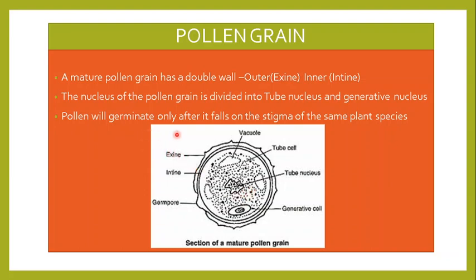The pollen will germinate only after it falls on the stigma of the same plant species. It will further grow only if it falls on the stigma of a plant of the same species; otherwise it will just die or degenerate. Only after it falls on the stigma of the same species will it further develop.